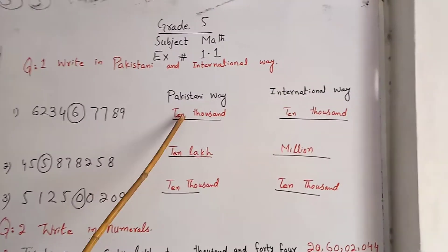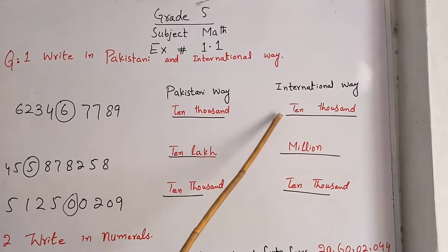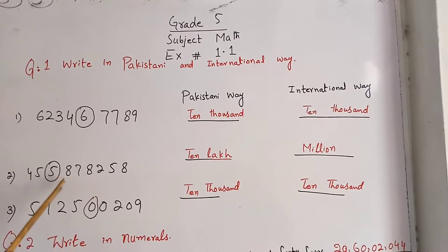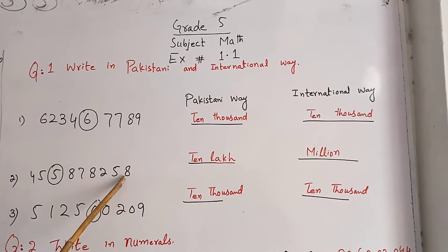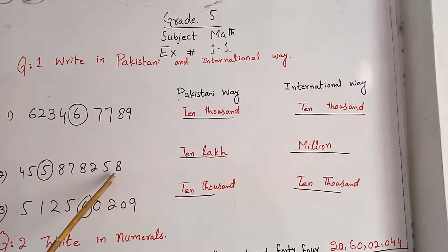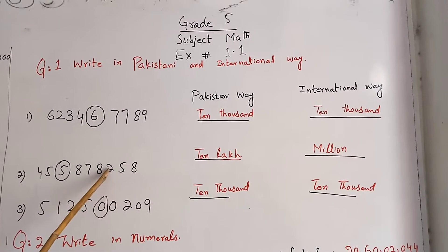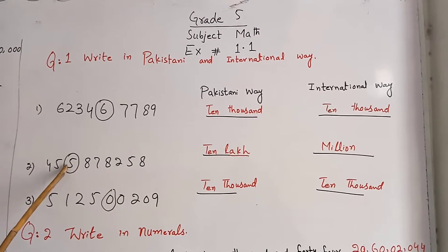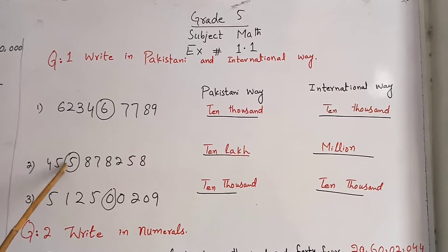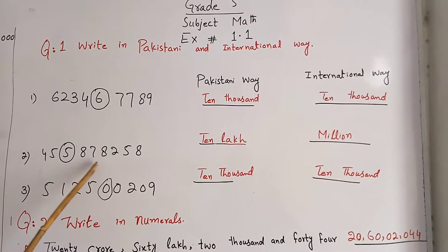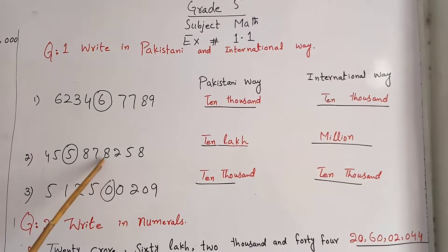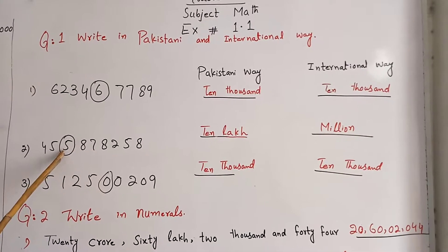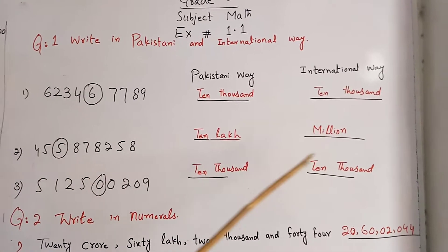What is the value of 6? Its place value is 10,000. For the next question, after 10,000, the value 100,000 will come and then million will start in the international way. So its value will be million.